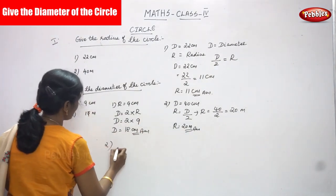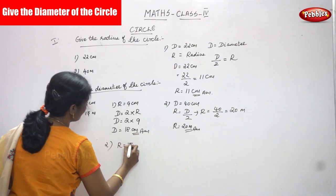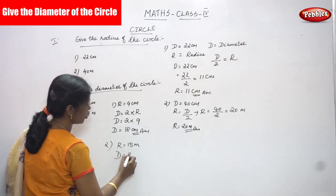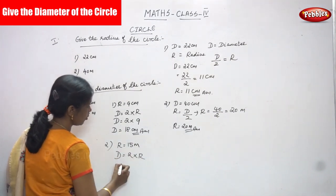The second question is 15 meter. r is equal to 15 meter. So you have to find out the diameter of the circle. d is equal to 2 into r. So what you are going to do?